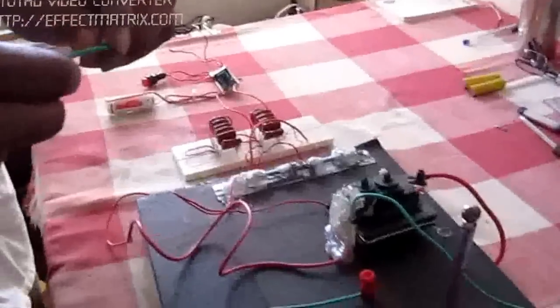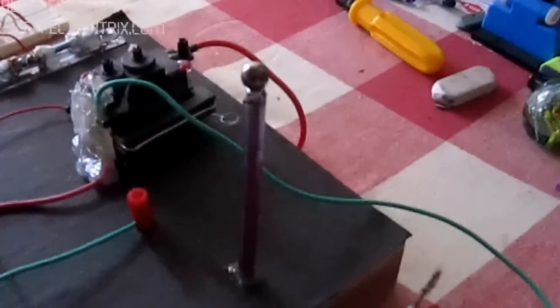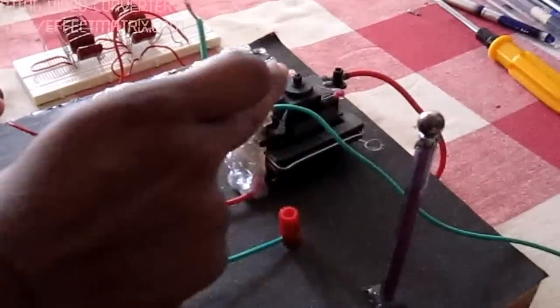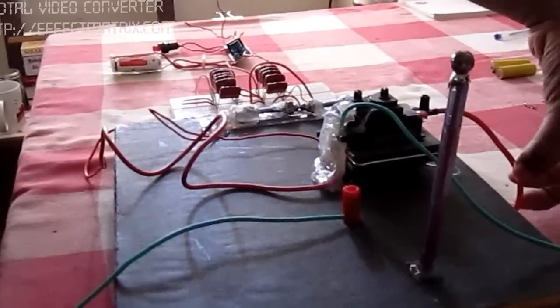But for us to understand the directional strike, we will keep this negative terminal. This negative terminal is the negative of the flyback secondary, and if you see this terminal here, this is the secondary of the flyback.